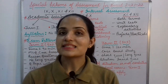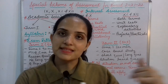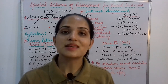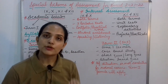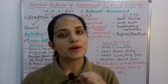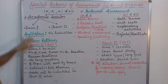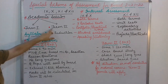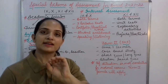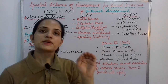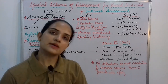CBSE has given this the name 'special scheme' because it is specifically for the current session 2021 to 2022. We don't know what will happen in the next session. This scheme applies to classes 9 to 12, including the 10th and 12th board classes. The academic session is divided into Term 1 and Term 2, with 50% of the syllabus in Term 1 and 50% in Term 2.